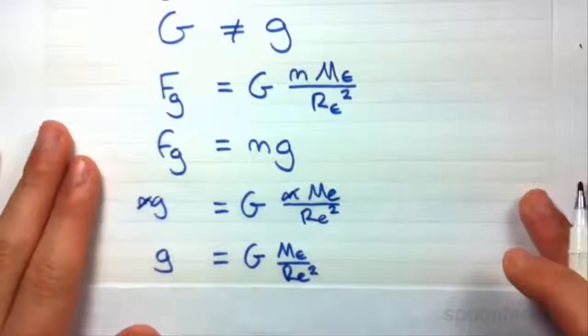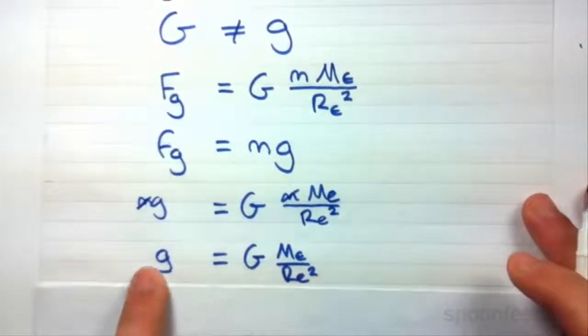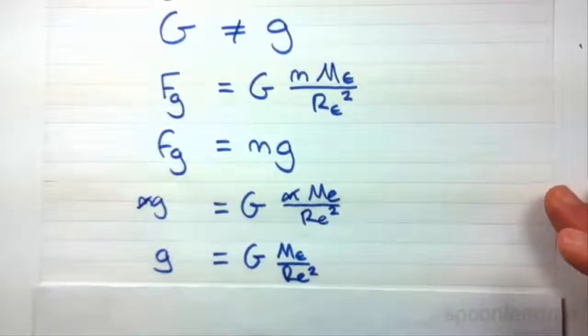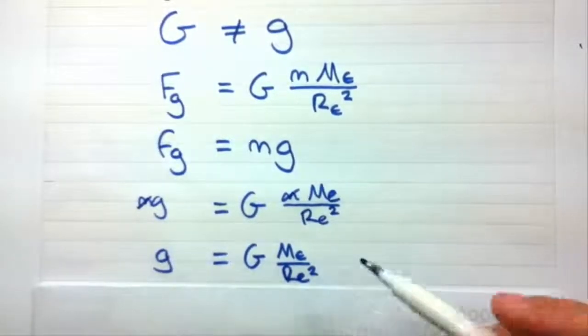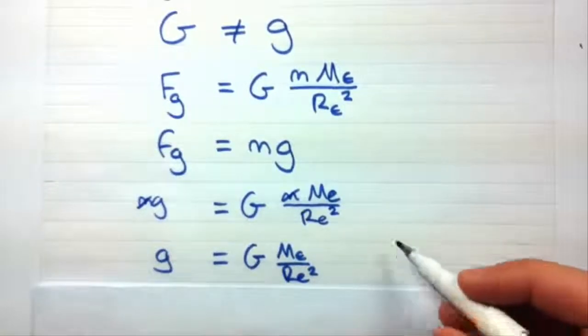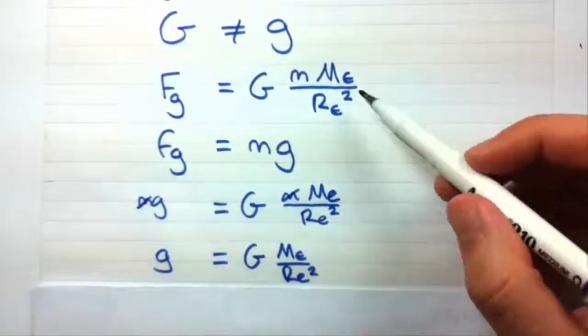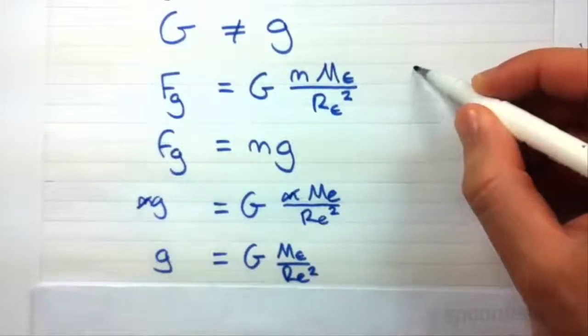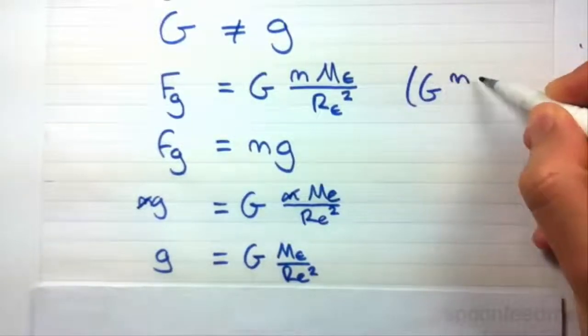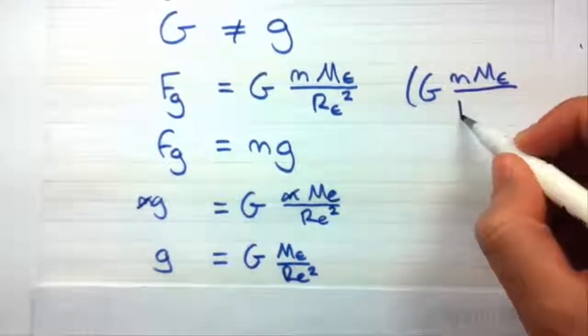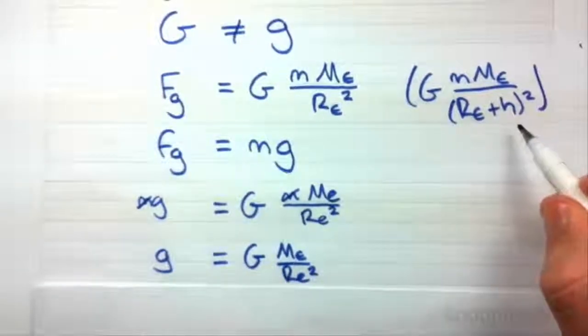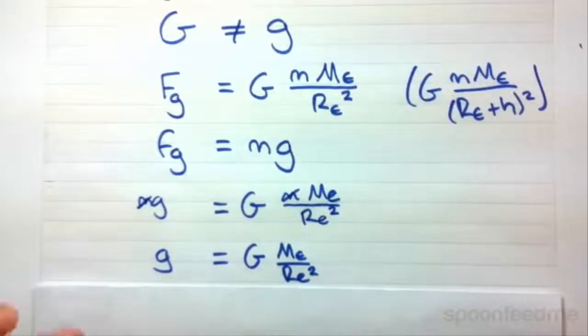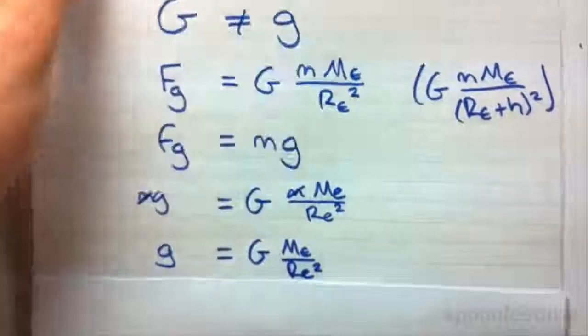If we have values for all those three things we can actually find g and you'll find that it actually equals 9.8 meters per second squared. Just quickly if the body is above Earth's surface we have to add that onto that radius. So often you'll see rather than this formula you'll see something that looks like this. Where H is the height of the body above Earth's surface. Right, so this is actually what we're going to use in our example.